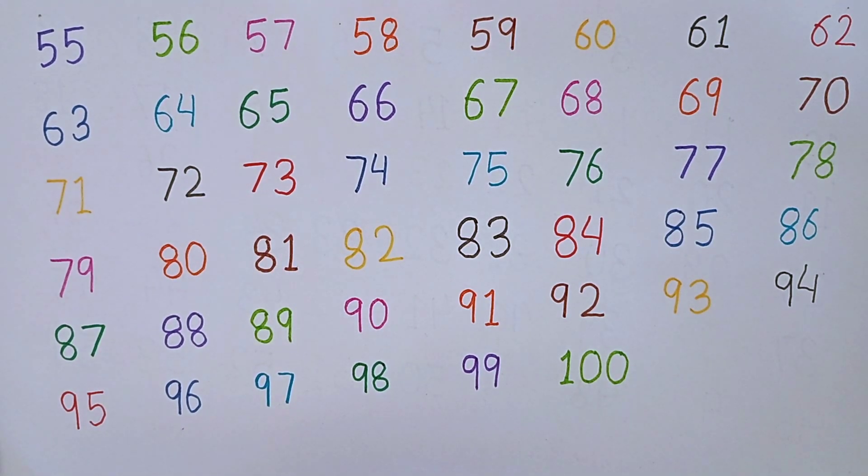So till now we have learned from 1 to 100. Again, count the numbers from 1 to 100 with me. 1, 2, 3, 4, 5, 6, 7, 8, 9, 10, 11, 12, 13, 14, 15, 16, 17, 18, 19, 20.